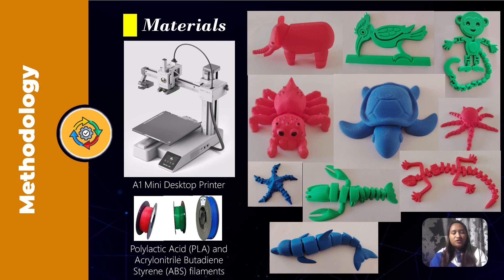In particular, the study used the A1 Mini Desktop 3D printer with single-color printing with its own Bamboo Studio Slicing software. The models were printed using polylactic acid or PLA and acrylonitrile butadiene styrene or ABS filaments, which are very common among filament types for 3DP.